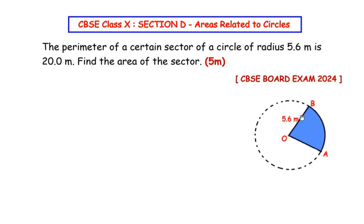OA and OB represent the radii of the circle and it is given as 5.6 meters. The perimeter of the sector is made up of the outline or border of the sector. The outline is made up of the radii OA, OB and the arc length AB. So the perimeter, that is the sum of the outline, is given as 20 meters.